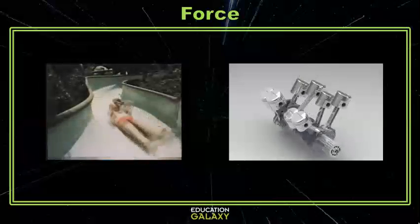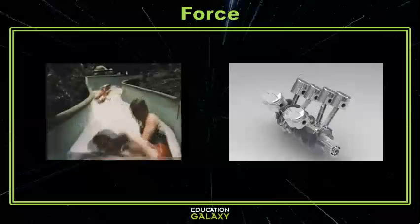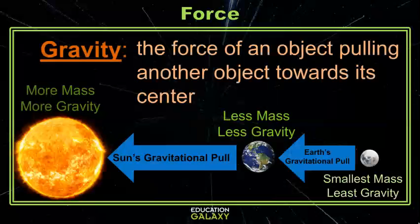Let's switch gears and look at forces that can work at a distance. We have magnetism and gravity. Gravity is the force of one object pulling on another. Everything has gravity, and everything is affected by gravity. The amount of gravity an object can pull with is related to the object's mass. The larger an object, the larger the mass, and the greater the gravitational pull.